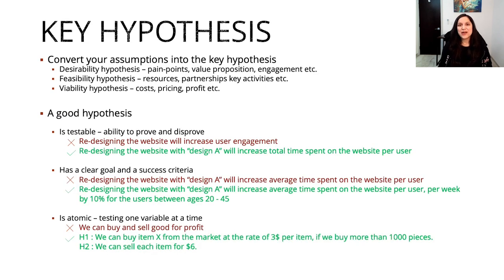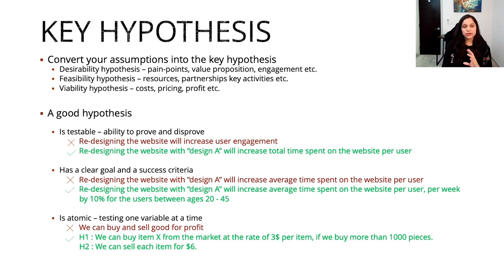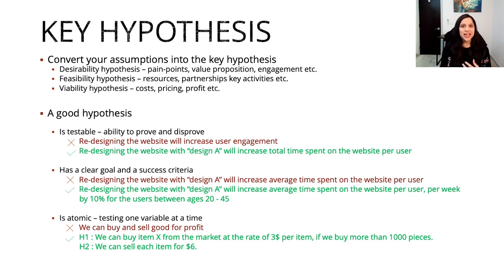At this point, you have some assumptions that you think might work for your product. What you want to do is convert your assumptions into key hypotheses. Hypotheses related to desirability might include pain points, value proposition, and engagement drivers. Those related to feasibility will talk about resourcing, key activities, and partnerships. And those related to viability will talk about costs, pricing, and profit. When creating key hypotheses from your assumptions, make sure your hypotheses follow three characteristics.